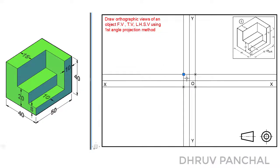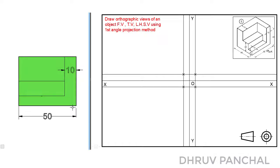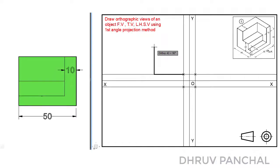The reference point is located at the bottom right corner. Let us observe the front view of the given object with respect to the given direction of view. The bottom right corner in the front view will be our starting point. From the reference point, draw a horizontal line of 50 millimeters, a vertical line of 40 millimeters, a horizontal line of 50 millimeters, and a vertical line of 40 millimeters.